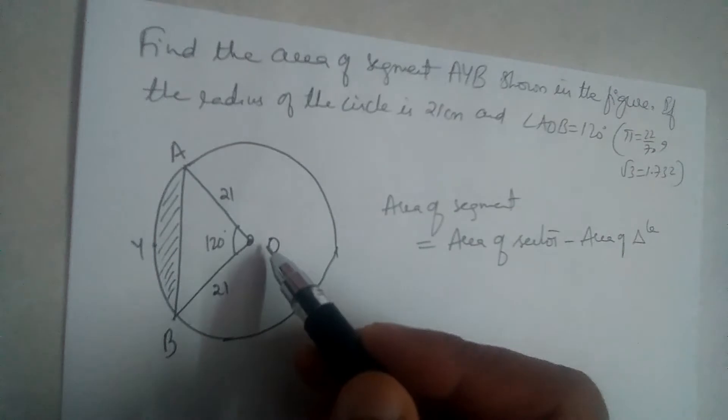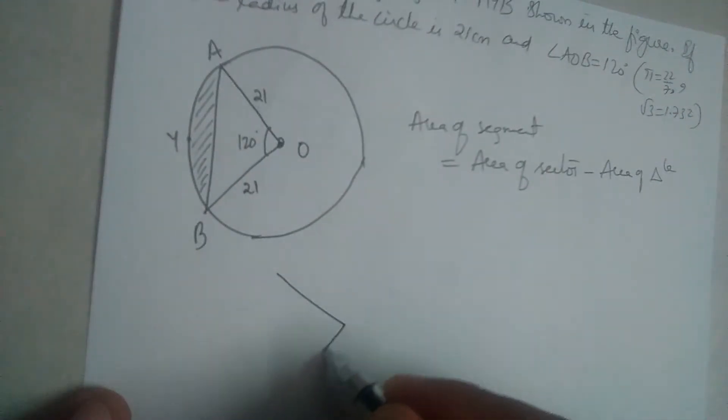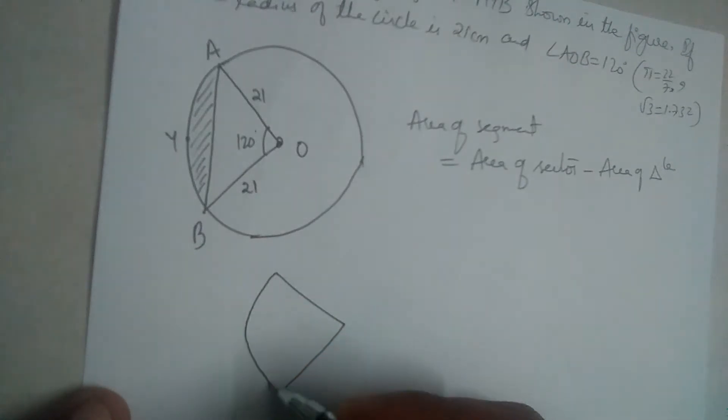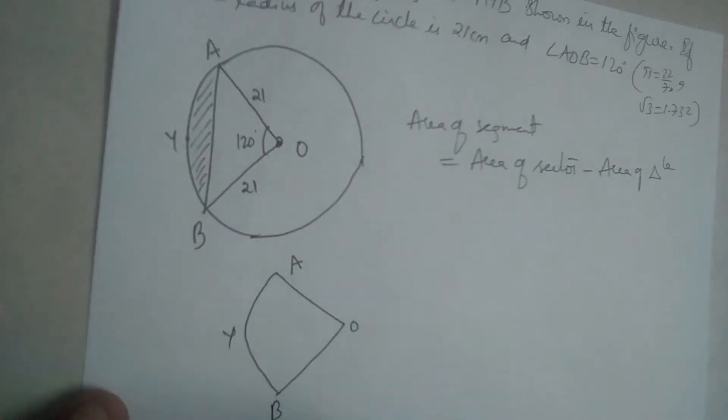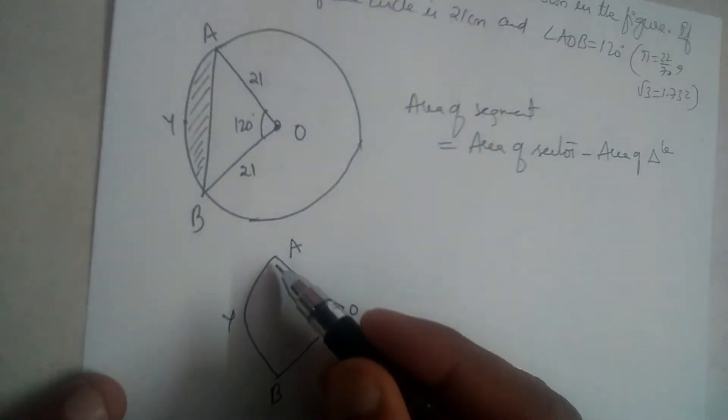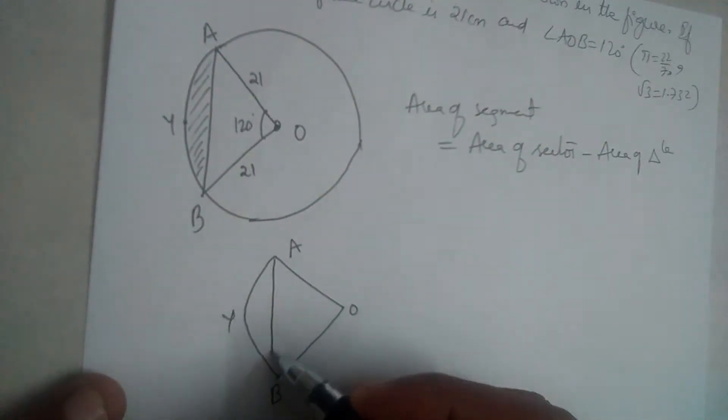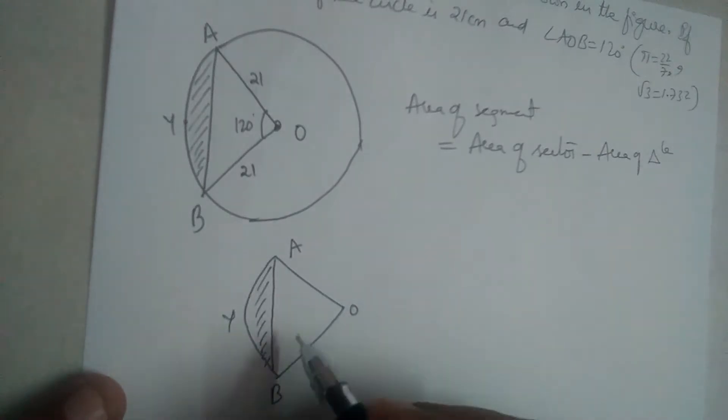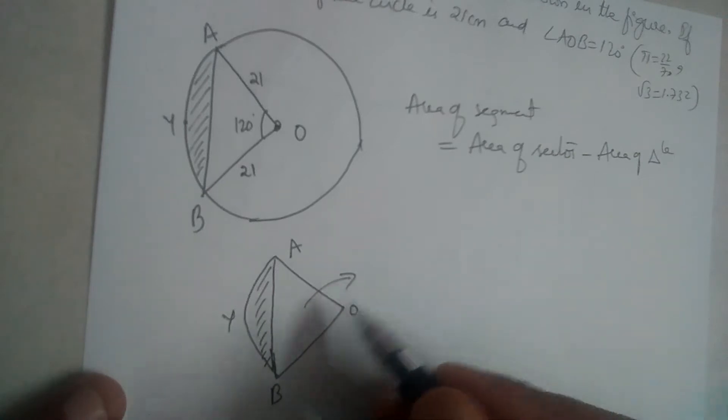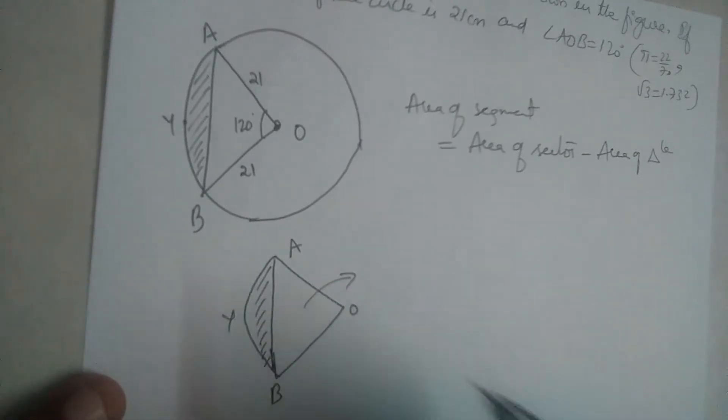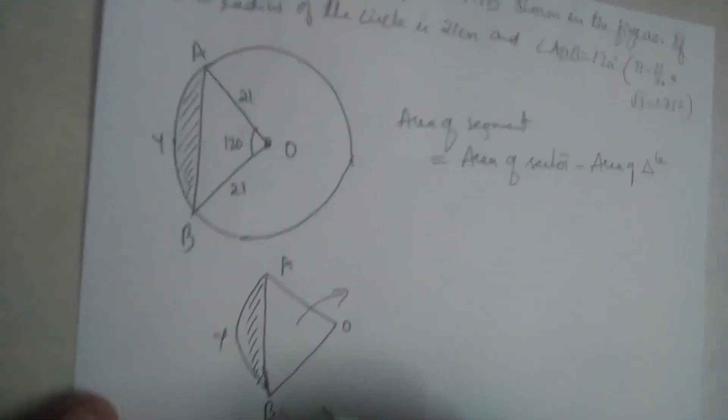Area of sector OAYB - this is the sector. Now, if we want to find AYB segment, we should subtract this triangle, area of this triangle from the area of sector.